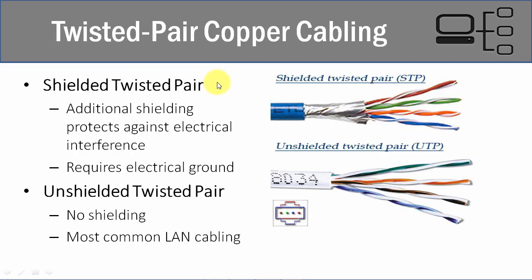There are two specific types of twisted pair cabling: shielded and unshielded. You'll notice there's metal shielding on one and none on the other. When the shielding is in place, it reduces signal emanations and EMI.